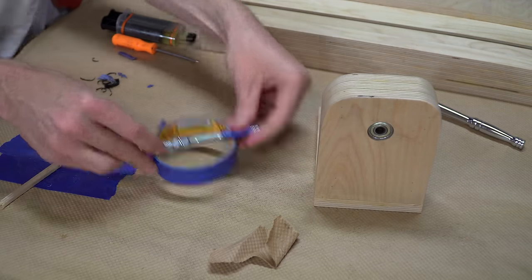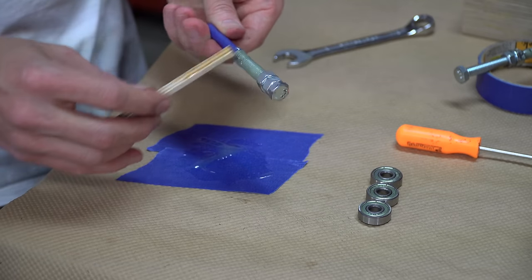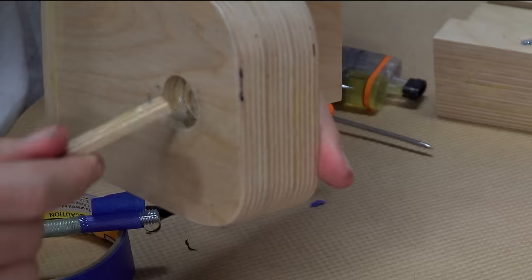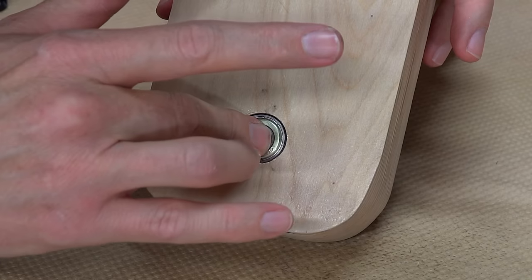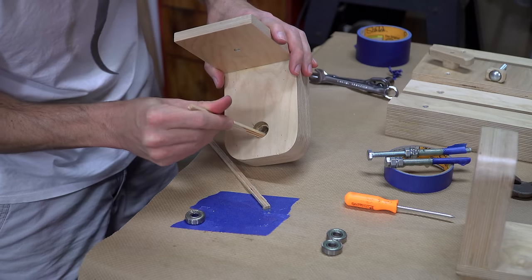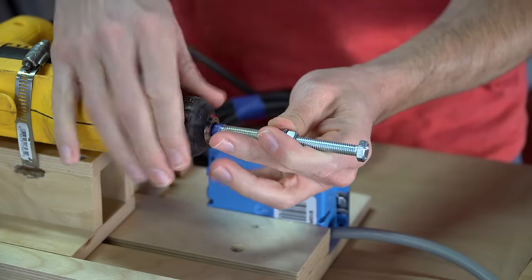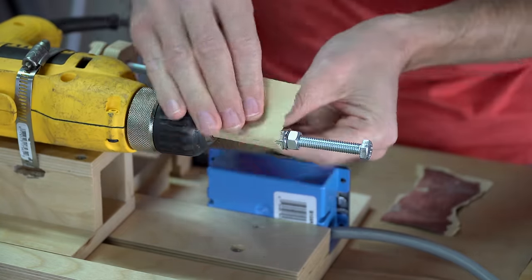The 5/16-18 rod is too big, however, to put a bushing around, so I created my own bushings by coating the threads in epoxy. I also used epoxy to improve the fit of the bearings in the 7/8 inch holes. I used the drill and some sandpaper to grind the epoxy down to size for a perfect fit.